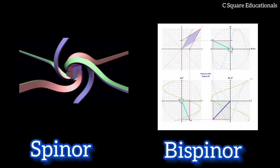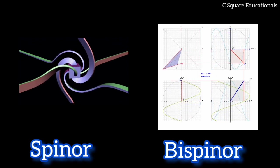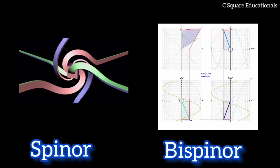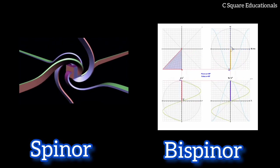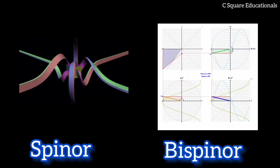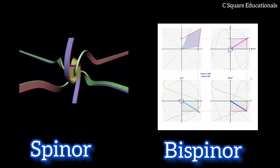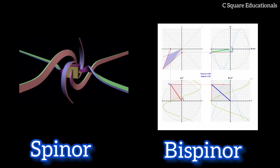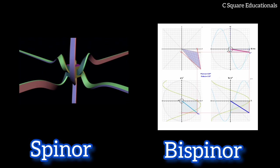Spin is described mathematically as a vector for some particles, such as photons, and as spinors and bispinors for other particles, such as electrons. Spinors and bispinors behave similarly to vectors. They have definite magnitudes and change under rotations. However, they use an unconventional direction. All elementary particles of a given kind have the same magnitude of spin angular momentum, though its direction may change. These are indicated by assigning the particle a spin quantum number.